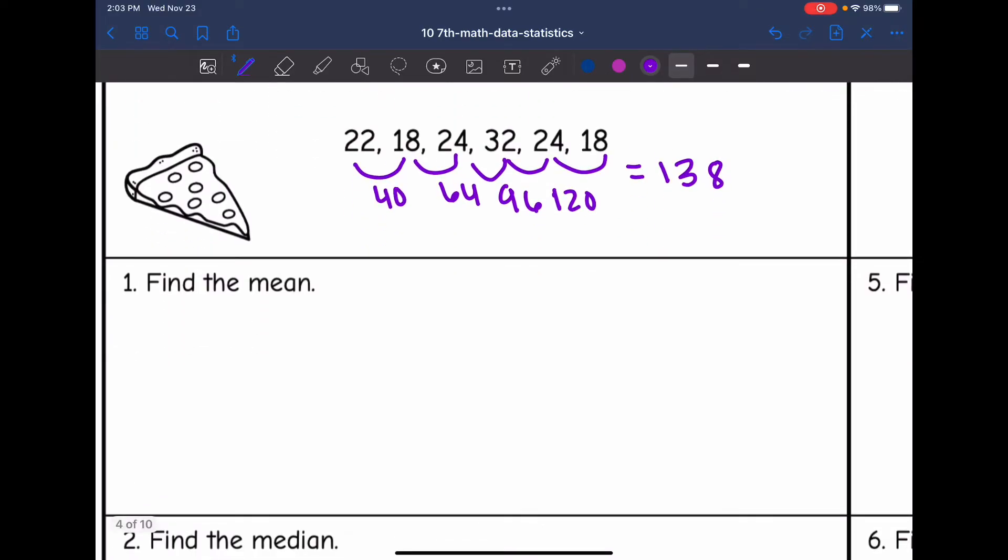So to find the mean, I will do 138 divided by six. And I get 23. So the mean of this data set is 23.